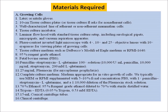Materials required for this test include, for growing cells: latex or nitrile gloves, 10 cm tissue culture plates, a well-characterized line of adherent or non-adherent mammalian cells, tissue culture incubator, laminar flow hood, micropipettes and vacuum aspiration apparatus, phase contrast inverted light microscope with different magnifications, tissue culture medium such as Dulbecco's Modified Eagle Medium, 95% reagent grade ethanol, fetal bovine serum, penicillin, streptomycin, L-glutamine solution, 25 mg/ml Plasmocin for mycoplasma prophylaxis, and complete culture medium.